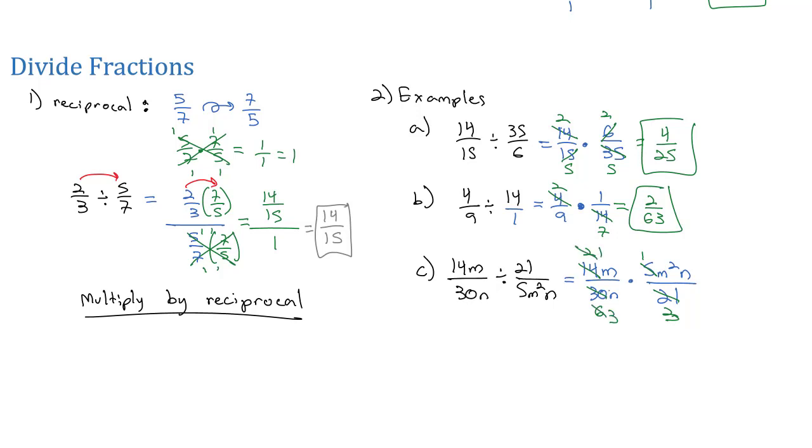Now, I look at the letters. I see a single n in the bottom, dividing out with a single n on top. And so, what I'm left with is 1 times 1, which is 1. m times m squared, that's a total of 3 m's that are multiplied together, m cubed. Over 3 times 3 is 9. m cubed over 9 is my final answer.